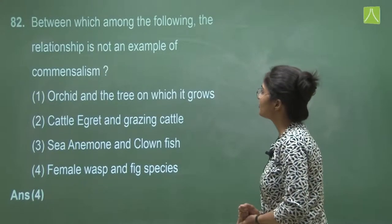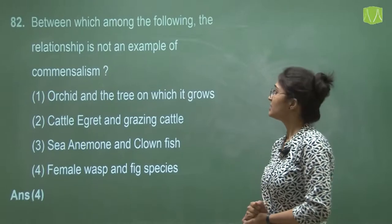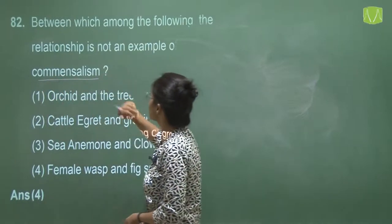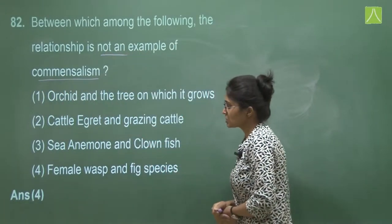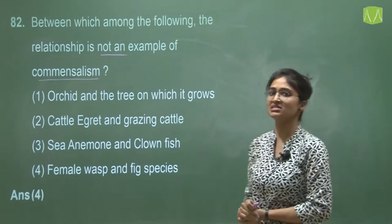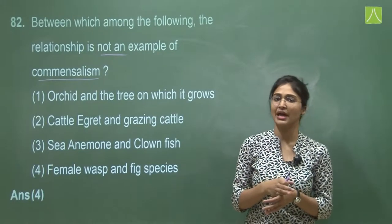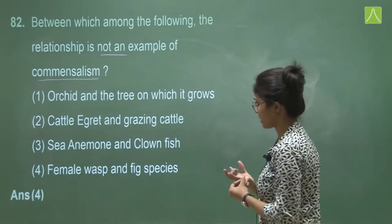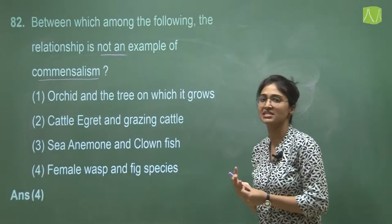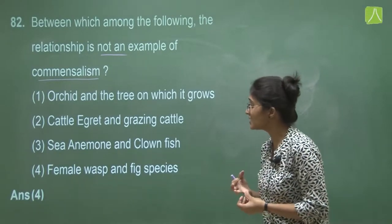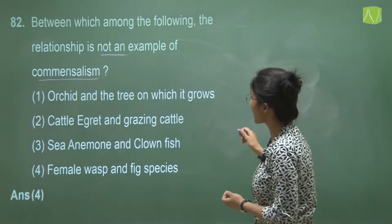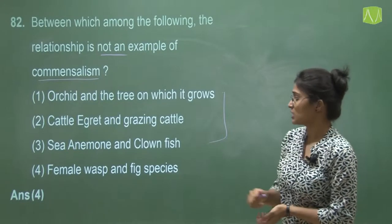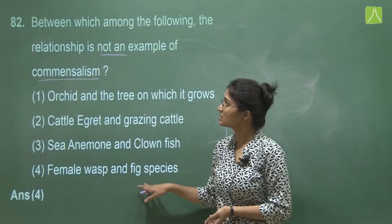Question 82 asks which relationship is NOT an example of commensalism. Commensalism means one species benefits and the other is neutral. Option one, orchid and the tree on which it grows — commensalism. Option two, cattle egret and grazing cattle — commensalism. Option three, sea anemone and clown fish — commensalism. Option four, female wasp and fig species — this is mutualism, not commensalism. So the answer is option four.